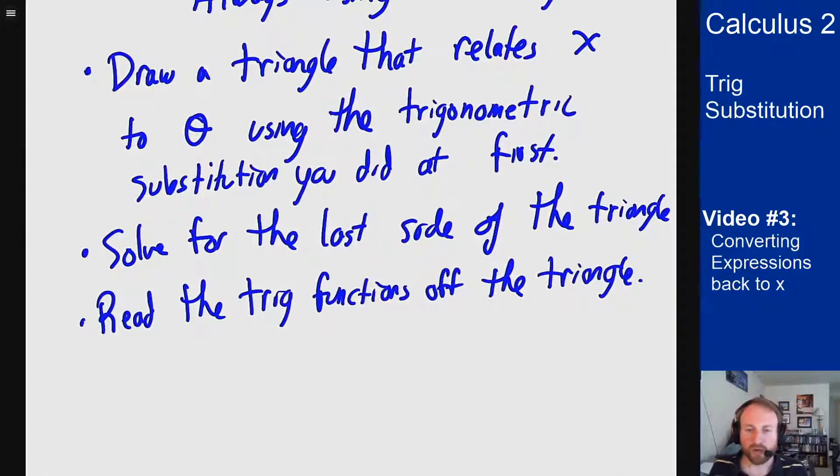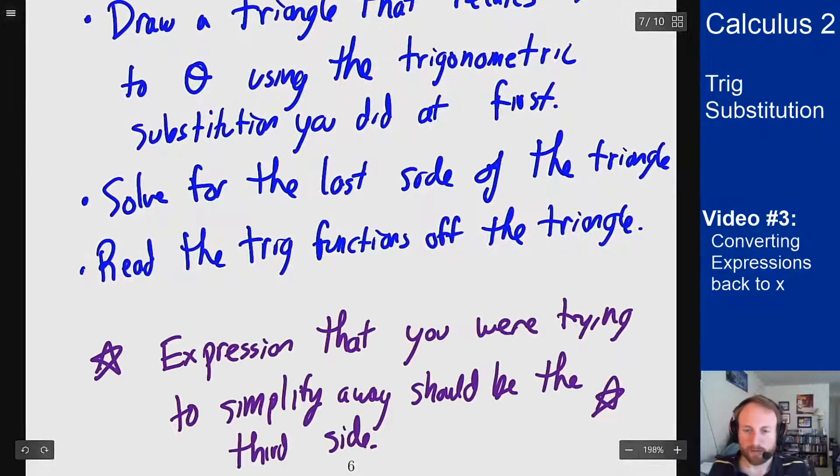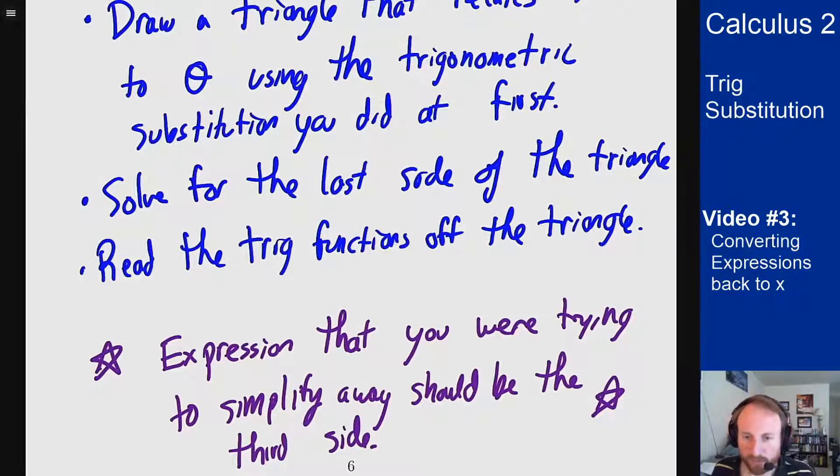An important point here to make sure you're on the right track, the expression that you had in your original integral should always show up in your triangle. So the thing that you were trying to simplify to get rid of a square root, that expression should always be the third side of your triangle. And you should always see that and it should come up in your answer as well, because that means you're solving the right problem.